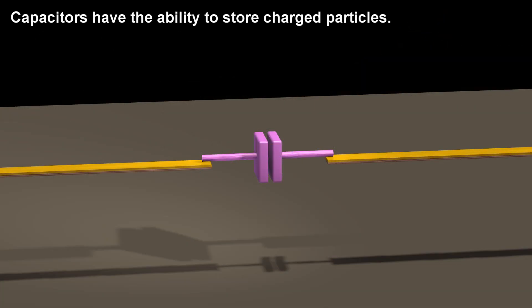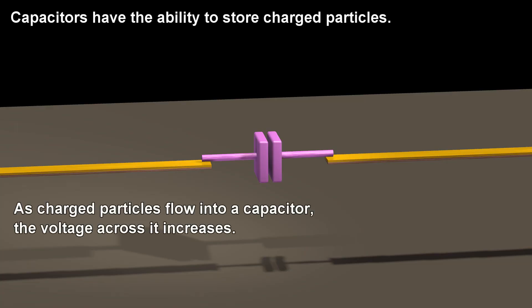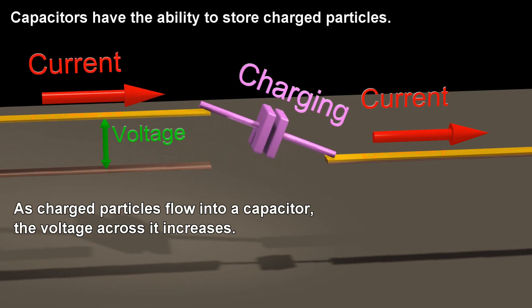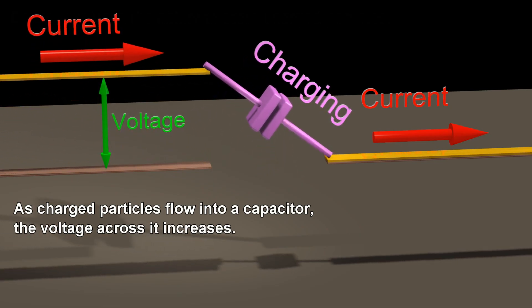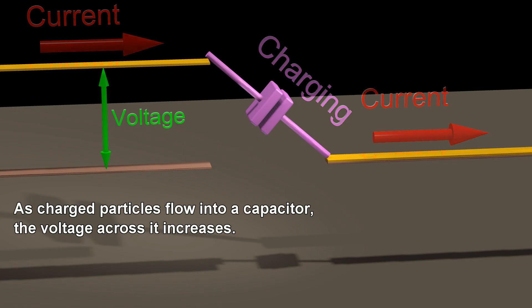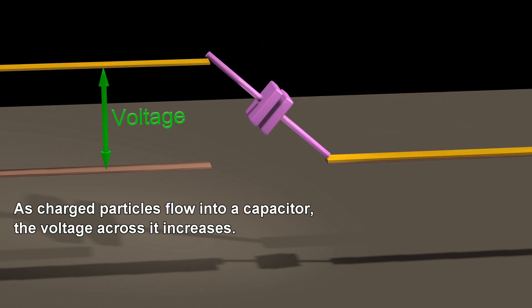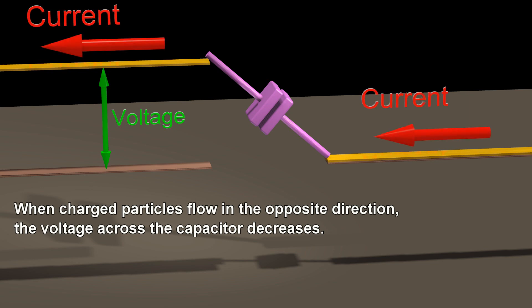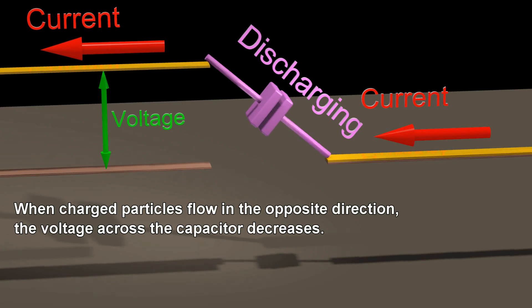Capacitors have the ability to store charged particles. As charged particles flow into a capacitor, the voltage across it increases. When charged particles flow in the opposite direction, the voltage across the capacitor decreases.